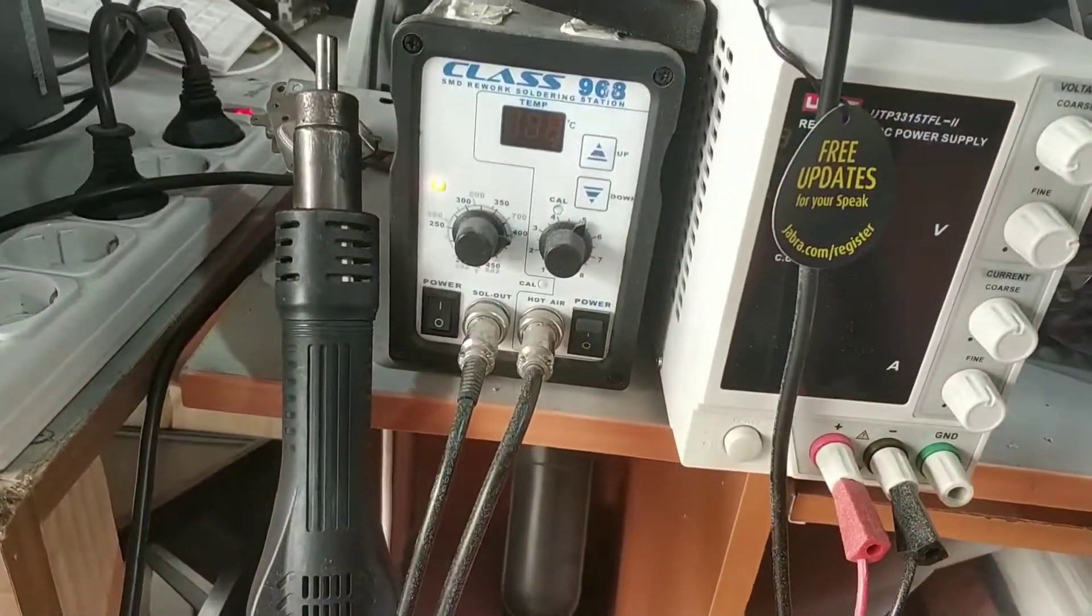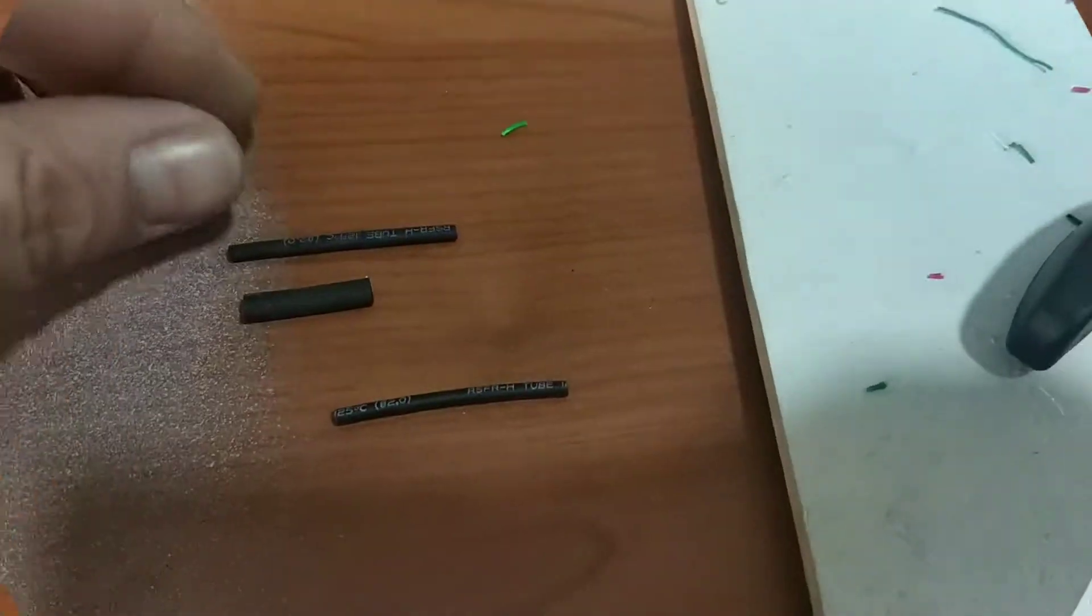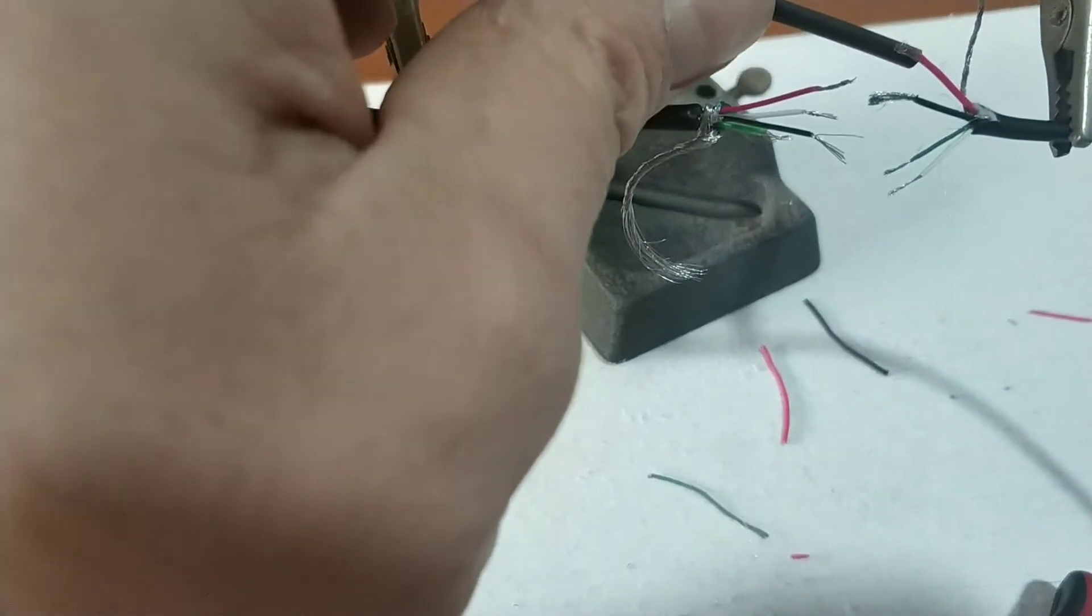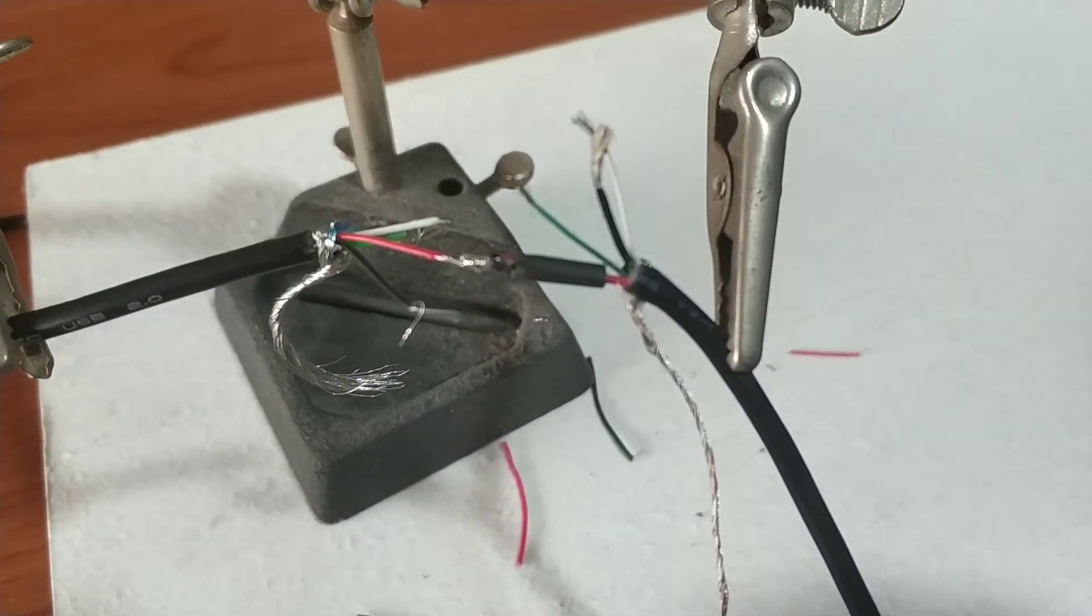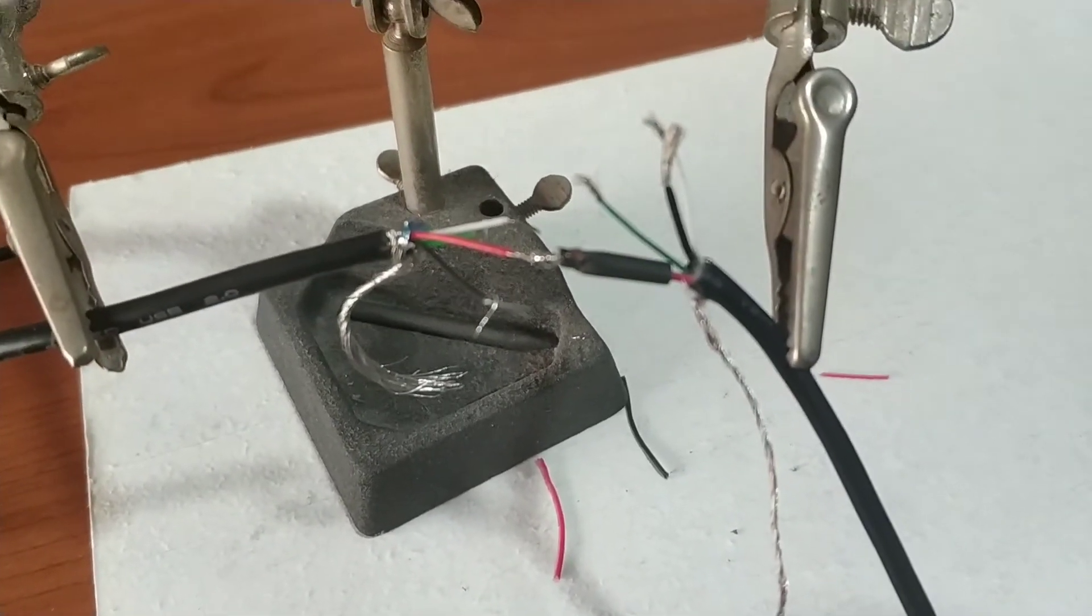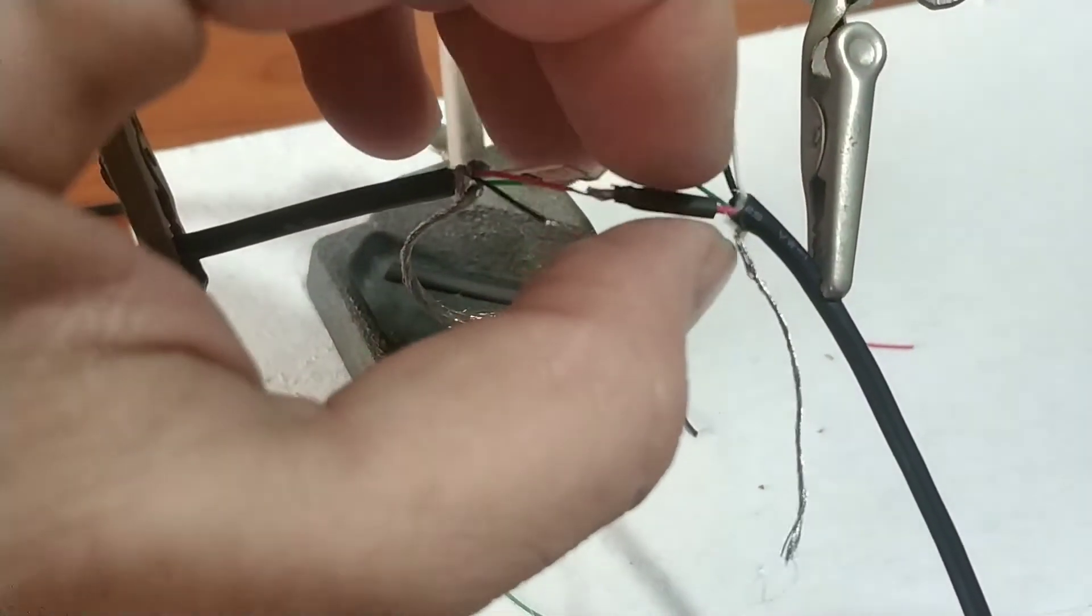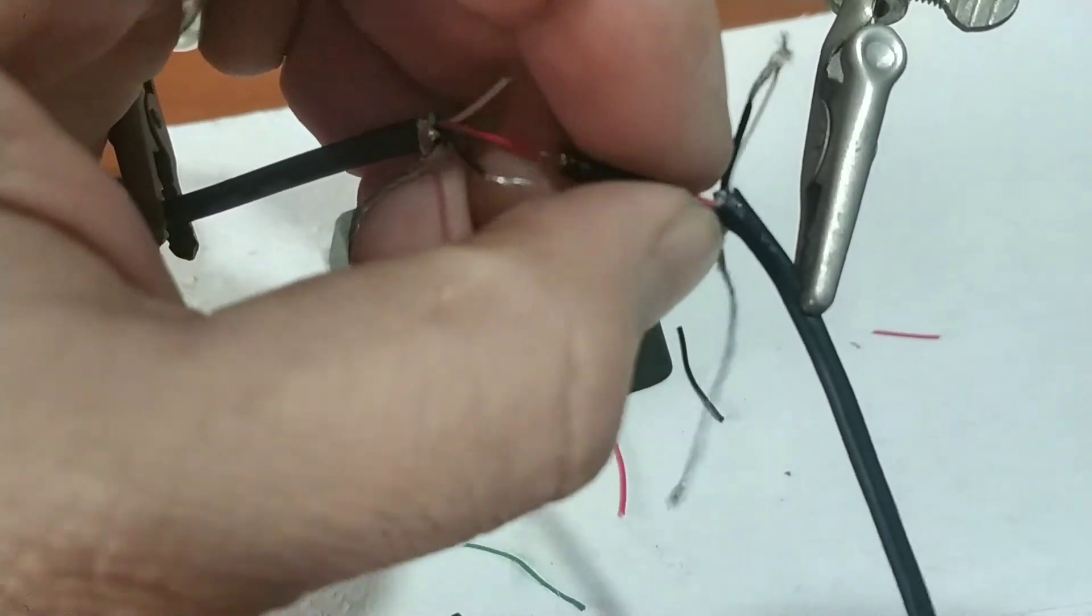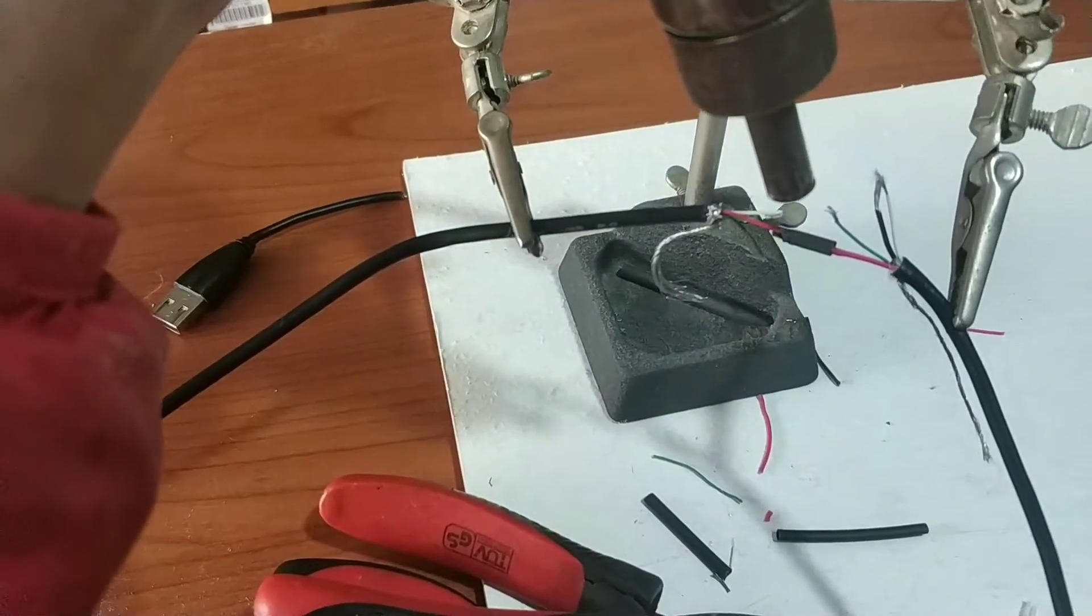Using the soldering iron and heat shrink tube, we will put it in here and solder the positive power cable. We connect it with the iron and apply the heat shrink with hot air.